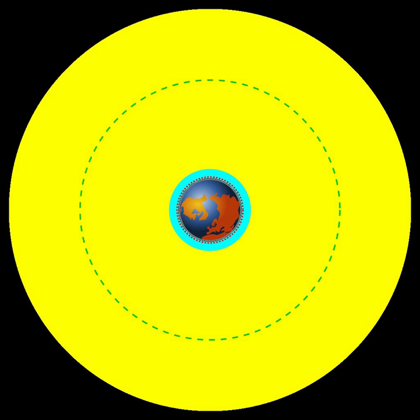Orbits around the L1 point are used by spacecraft that want a constant view of the Sun, such as the Solar and Heliospheric Observatory. Orbits around L2 are used by missions that always want both Earth and the Sun behind them. This enables a single shield to block radiation from both Earth and the Sun, allowing passive cooling of sensitive instruments. Examples include the Wilkinson Microwave Anisotropy Probe and the upcoming James Webb Space Telescope.